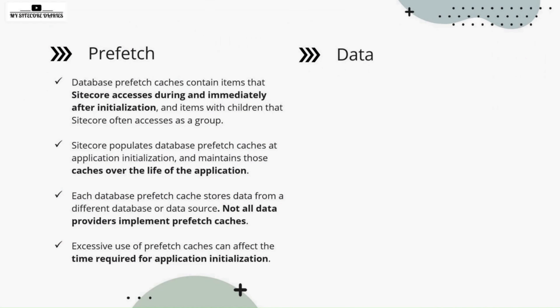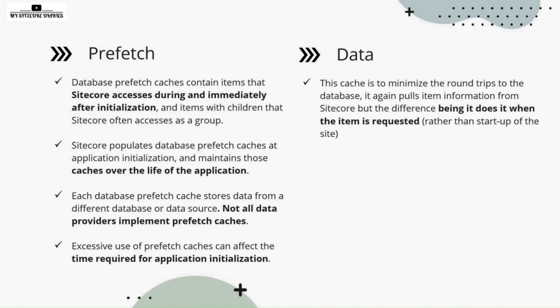There is another layer called the data cache. This cache is to minimize the round trips to the database. It pulls the data and item information from Sitecore, but the difference is it does so when the item is requested, rather than at the startup of the site. Pre-page cache builds the cache at startup, whereas data cache is on the basis of request.